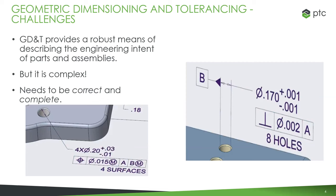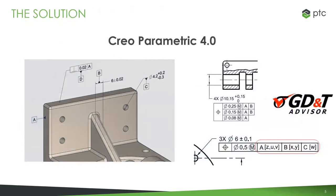New to CREO Parametric 4, the entire user interface for model-based definition and geometric dimensioning and tolerancing has been completely revamped. We redid a lot of the work in CREO Parametric to make it easier to use, easier to understand, and to have tools to show you how to get your enterprise up and running on model-based definition and GD&T. It's often a switch that companies have to make, so we wanted CREO to take those challenges into account and really help address some of those problems.